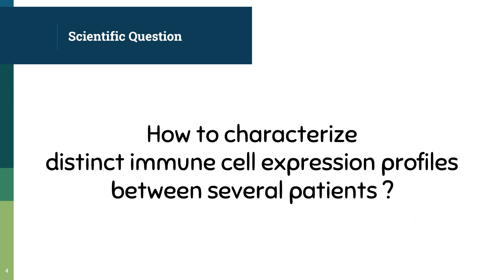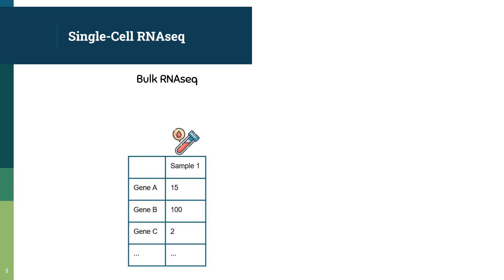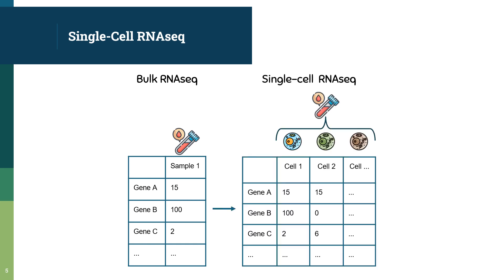So, how to characterize distinct immune cell expression profiles between several patients? To conduct this study, we decided to use single-cell RNA sequencing. Here we can see the data obtained from classical or bulk RNA-seq, which gives us the expression for each gene in a given sample. But one sample is often constituted of several cell types with their distinct roles and expression profiles. This is where single-cell RNA sequencing is interesting, because it allows us to look at the expression of genes in each cell present in the sample. This is crucial to our project since immune cells have very specific roles.